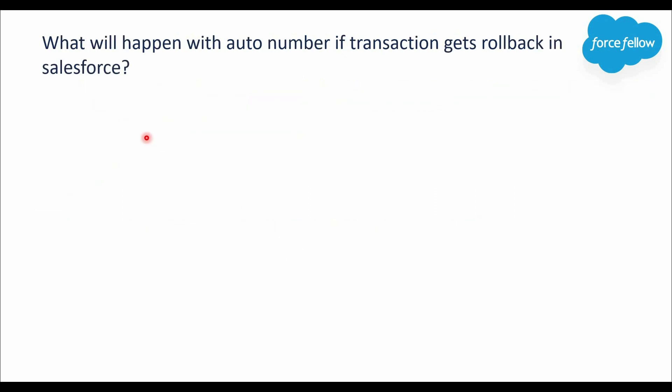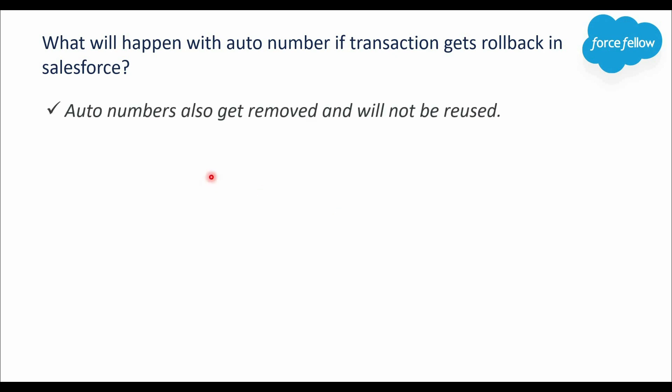Final question: what will happen with auto numbers if a transaction gets rolled back in Salesforce? Salesforce has an auto-number data type that generates a sequential number in a given format, automatically incremented for each new record. If while inserting a Contact record an error occurs and the transaction is rolled back, that auto-generated number will also be removed and will not be reused — to prevent data inconsistency. In short, auto numbers always generate unique values and are never reused after a rollback.